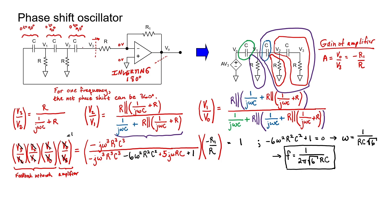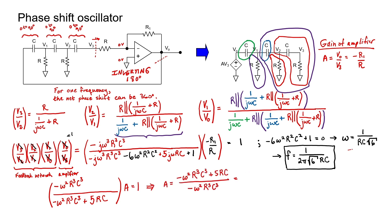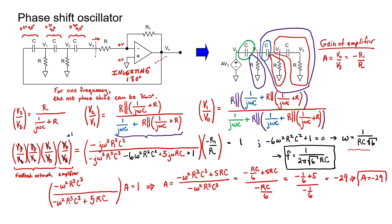This is the very special frequency where the phase shift through the three capacitors will be exactly 180 degrees. We simplify the imaginary parts, cancel out j and one of the omegas, and substitute in the frequency of oscillation. We've calculated that the gain of the inverting amplifier in the phase shift oscillator has to be negative 29 in order for the signal to sustain itself around the loop. But if we were to actually build that circuit, we would want to design it so that the magnitude of the nominal gain is higher than 29, to account for losses and to ensure the signal can build up from noise.